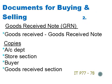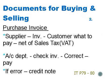Once the goods are received by the customer, a goods received note will be made out and sent to other departments. Copies are sent to the accounts department to check against the invoice, to the store section to update inventory records, to the buyer to confirm the ordered goods have arrived, and to the goods received section for their records. The supplier will then send a purchase invoice telling the customer what to pay, net of the amount of items and sales tax (VAT). The accounts department will check the invoice to confirm the correct amount was charged and the goods were received, then they will pay the invoice.